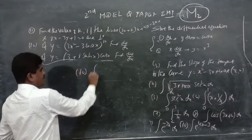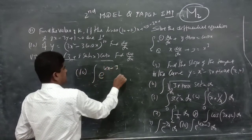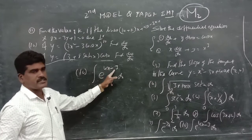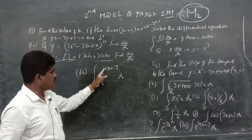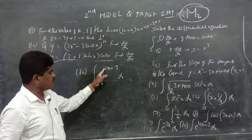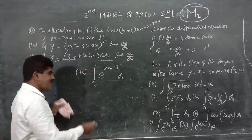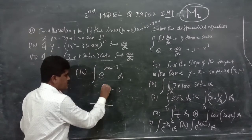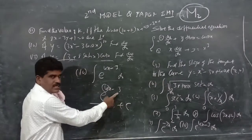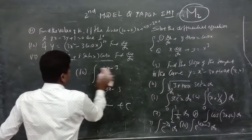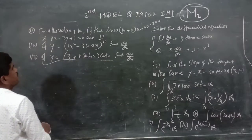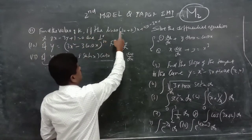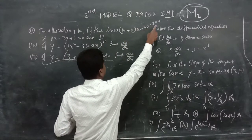Tenth problem: evaluate the integral of e^(4x minus 3) dx. Using the same rule, e remains as it is and we divide by the coefficient of x, which is 4. The answer is e^(4x minus 3)/4 plus C.